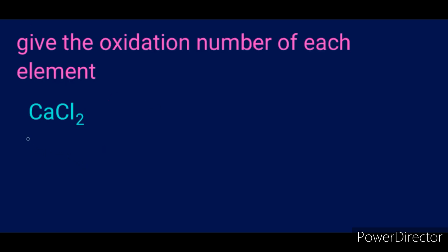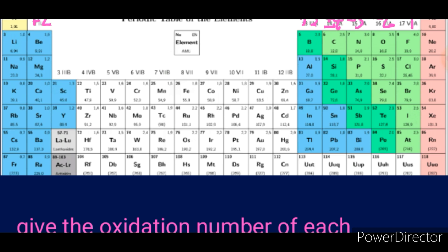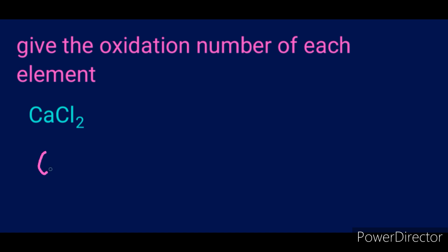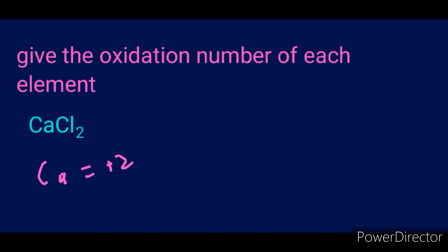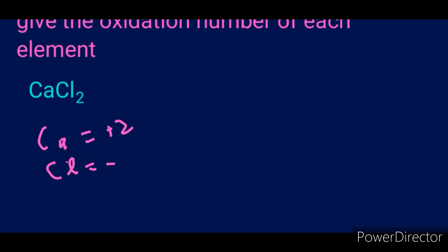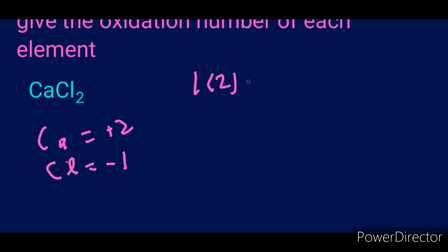Here's another example — calcium chloride. Calcium is in group two so its oxidation number is +2. Chlorine is in the second-to-last group, so it's −1. To verify the total charge is zero: 1×(+2) + 2×(−1) = 2 − 2 = 0. That confirms we are correct.